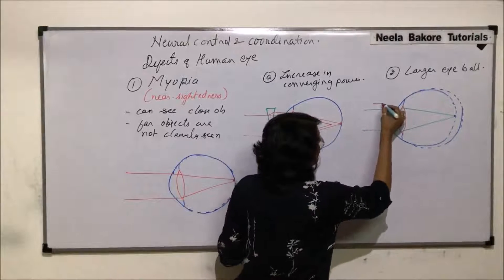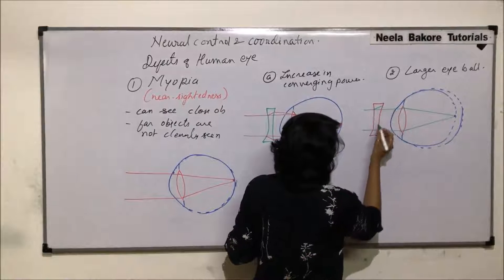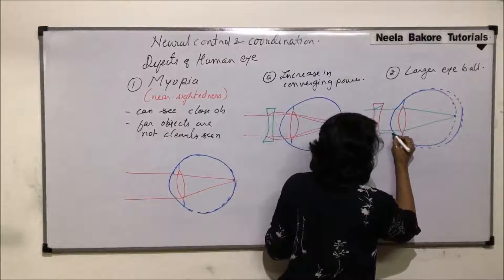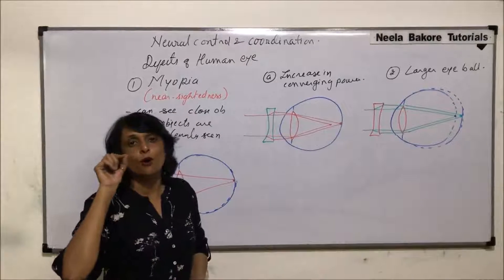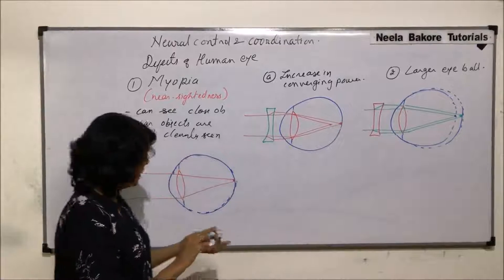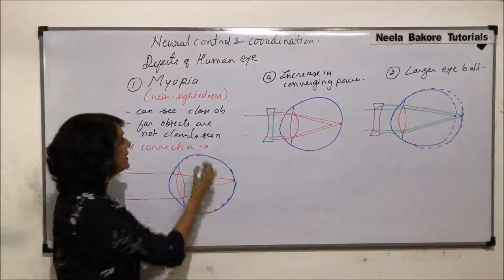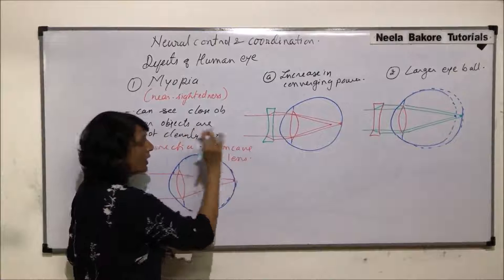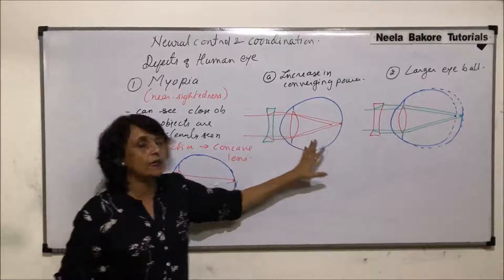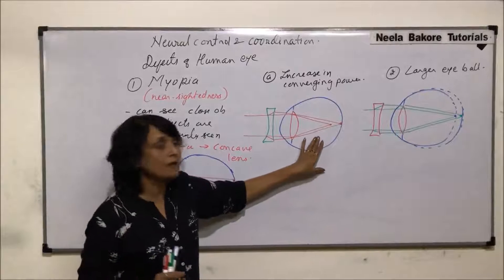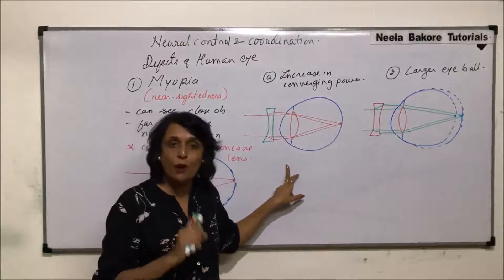The same correction applies for the larger eyeball case. Using a diverging lens, it diverges the rays, and the eye lens must then focus those diverged rays. When focused, the image forms on the retina. So for myopia, correction is done using a diverging lens — that is, a concave lens. The image was forming in front of the retina in both cases, causing a blurred image.